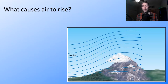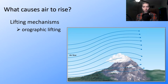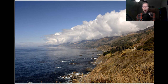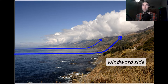What causes air to rise? Our first primary lifting mechanism is orographic lifting. This is the process in which mountains or highlands act as barriers to airflow and force the air to ascend. The air cools adiabatically, and clouds and precipitation may result. We see in this graphic airflow being forced up and over a mountain, with clouds forming midway up. On the west coast of California, moist air coming in off the Pacific rises, cools, condenses, and forms clouds — that base of clouds on the windward side is our lifting condensation level.